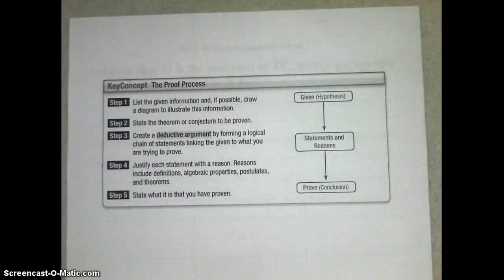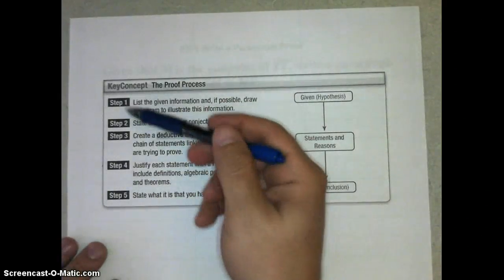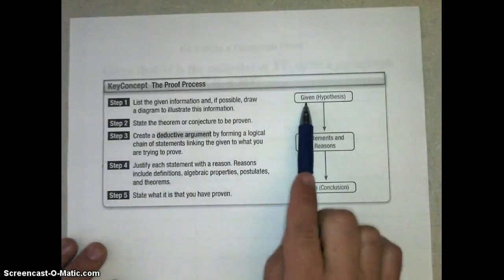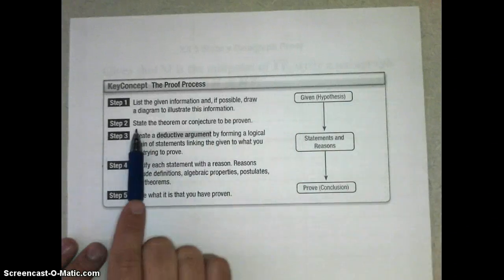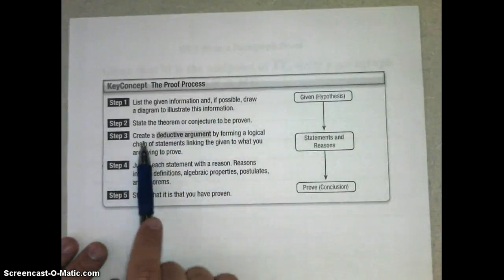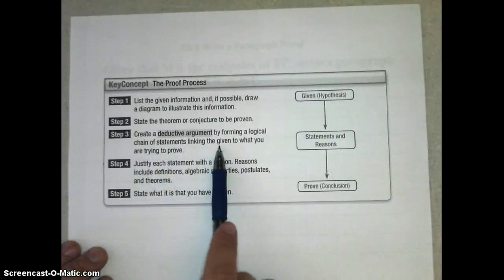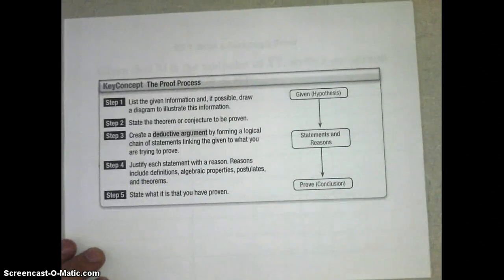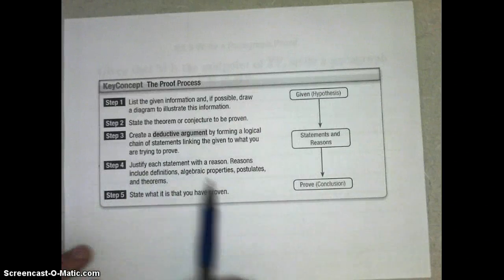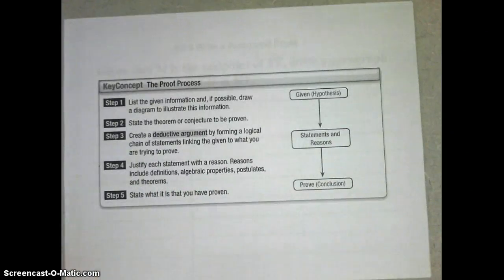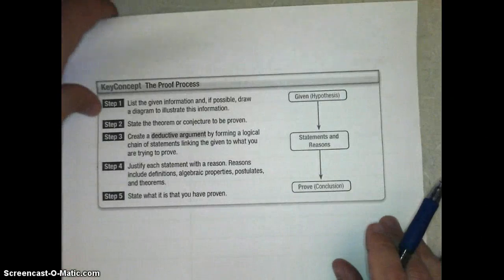Let's take a look at the proof process. In writing proofs and using these postulates and properties and things like that to help make arguments, or deductive arguments, there are five steps we must go through. First, we need to list the given information and, if possible, draw a diagram to illustrate that information, and that's where we are given our statements, that's like our hypothesis. Step 2 is to state the theorem or conjecture to be proven, and a lot of the times we'll put both of these pieces together. And then in step 3, we can create our deductive argument by forming logical chain of statements linking the given to what you are trying to prove. We want to create a chain that is linked together. I can't skip links in the chain of logic without summing those up. In step 4, we're going to justify every statement we make including definitions, algebraic properties, postulates, and theorems. And lastly, we're going to state what we were trying to prove as proven. So we're going to keep this in mind as we try and construct our proofs.